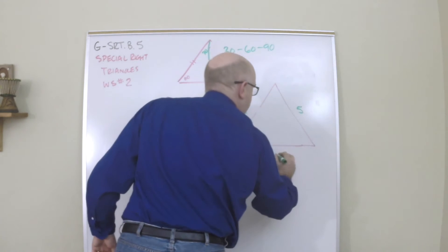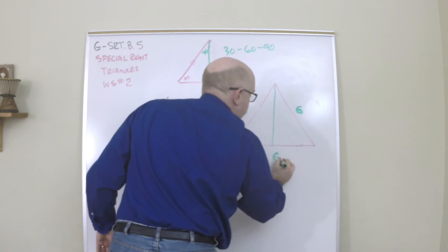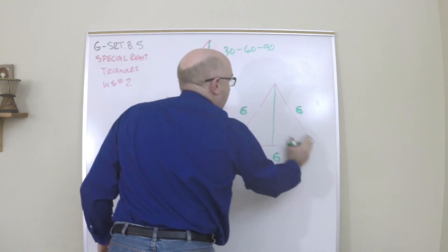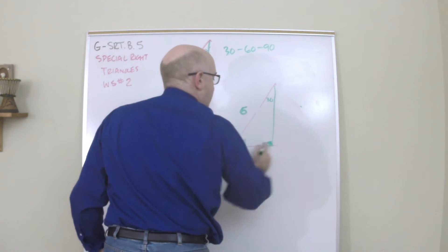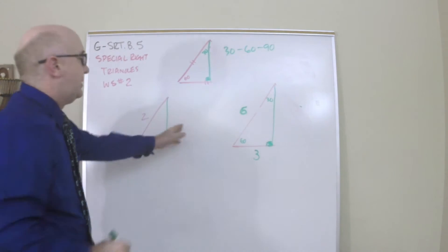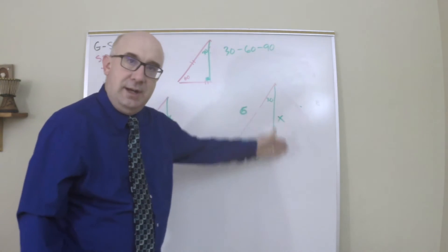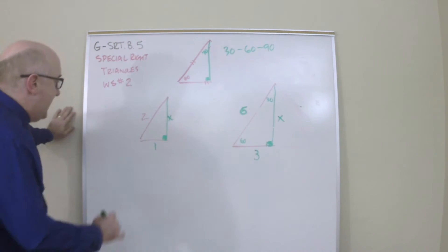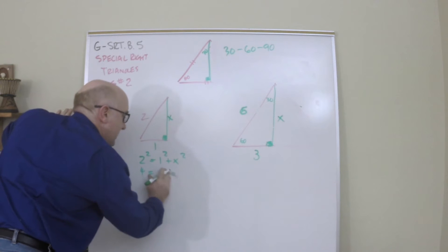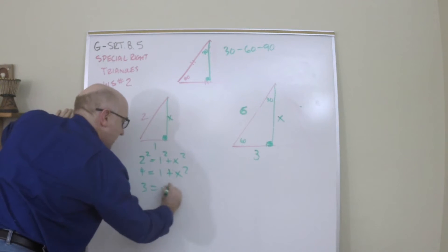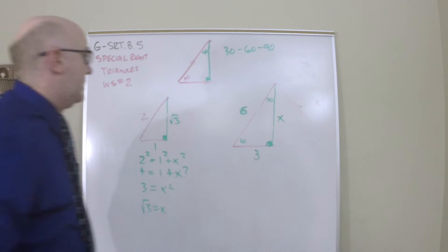Let's use 6 for the equilateral triangle side length. When I drop the altitude down in my equilateral, it creates a 30-60-90 right triangle, and what used to be 6 is now 3 on the base. The question becomes what is the remaining side and is there a relationship there — we see half or double here.